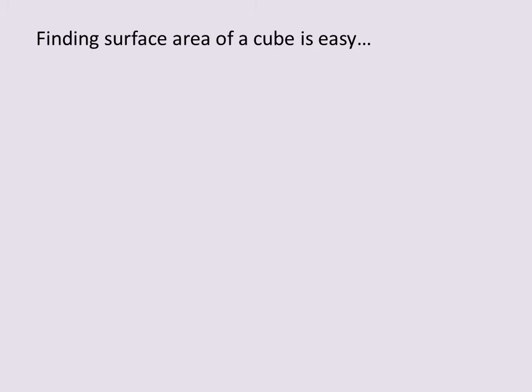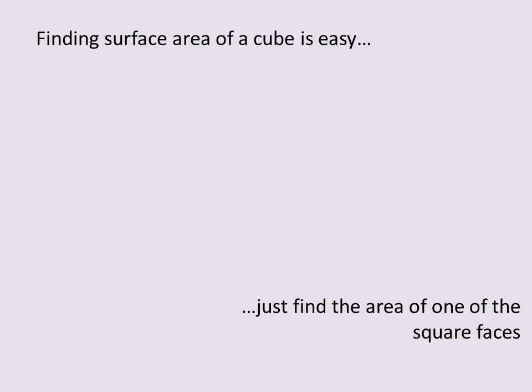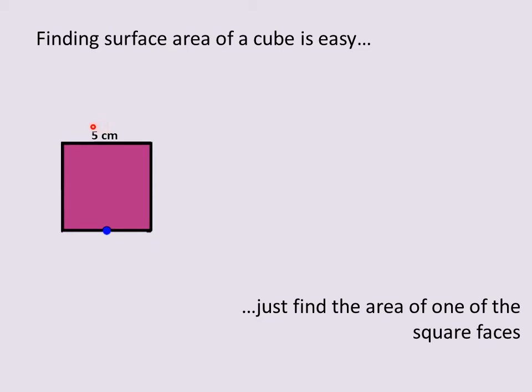How do we find the surface area of a cube? It's easy — all we're going to do is find the area of one of the square faces. Remember, each face or surface of the cube is a square. We just need to find the area of one of the square faces, and we all remember how to find the area of a square: we take side times side, or side squared. In a square, all the sides measure the same length.